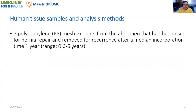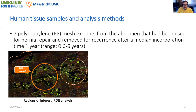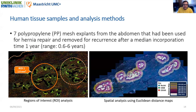Using this approach, we analyzed seven polypropylene human mesh explants from the abdomen that had been used for hernia repair and removed for recurrence after a median incorporation time of one year, with a range of 0.6 to six years. We performed two separate analyses: the first with selected regions of interest placed around mesh fibers, and the second with manually outlined individual mesh fiber areas processed using Euclidean distance to establish distance maps with six regional zones covering a total distance of 350 microns from the mesh fibers.